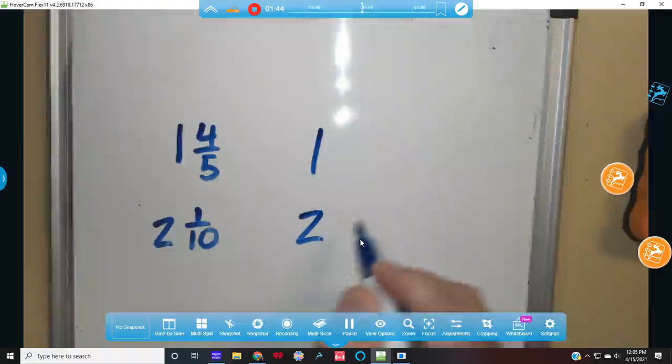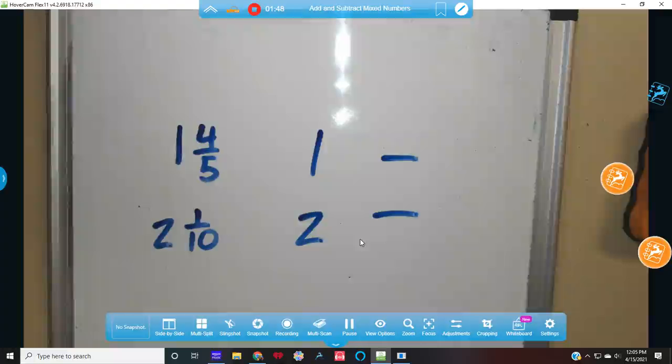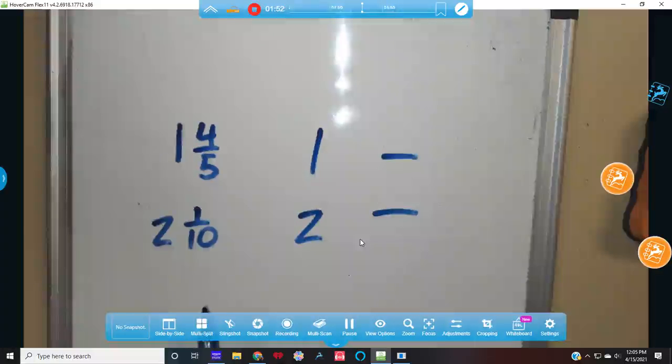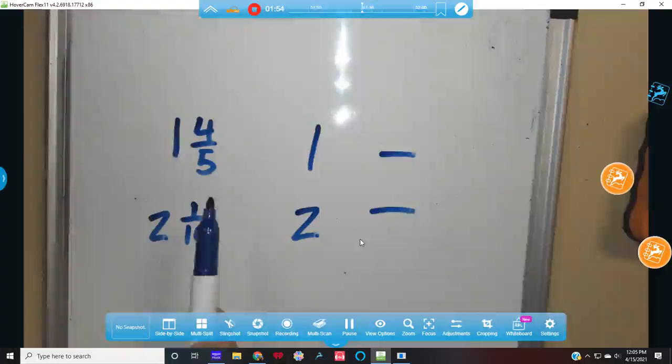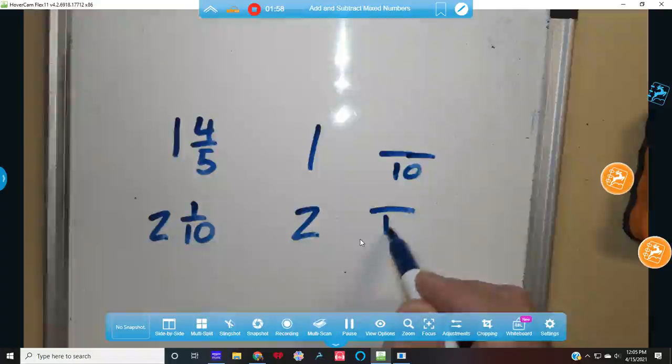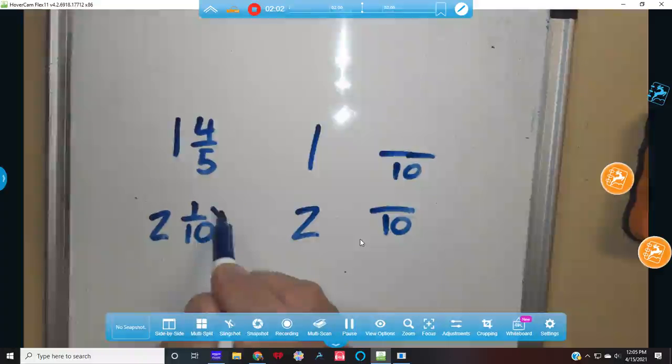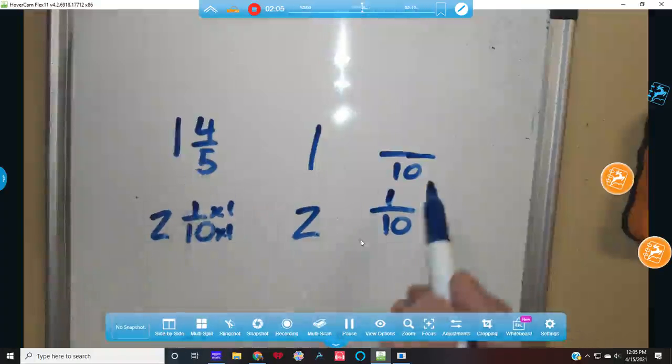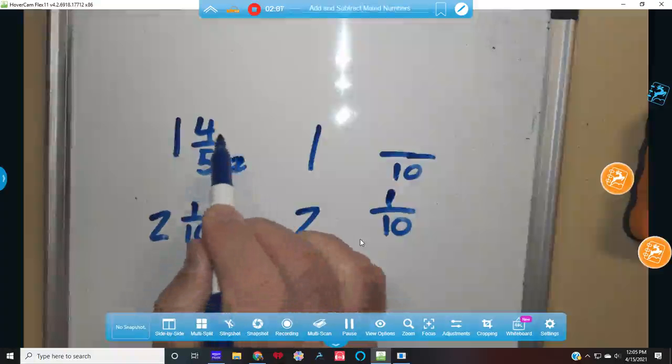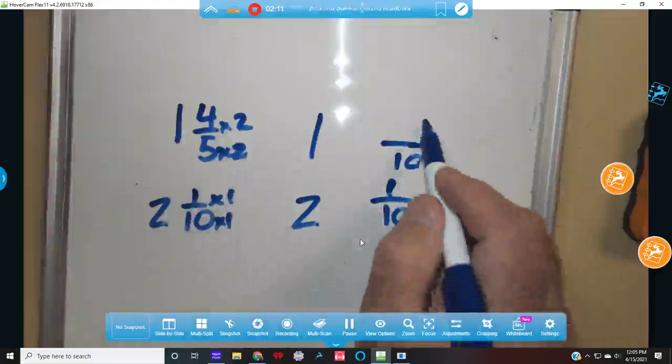So I have 1 and I have 2. I'm looking for a common denominator. Well, just using my math skills, I'm going to say I know that 5 and 10 are common multiples. I'm going to put a 10 here and a 10 here. 10 times 1 equals 10, I have to do the same to the top. That one stays the same. How did I get there? I multiplied by 2. 4 times 2 is 8.